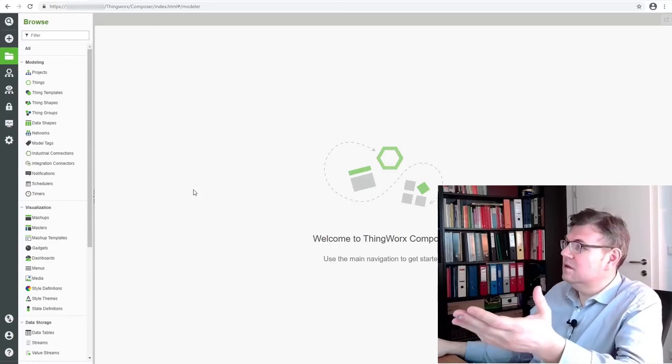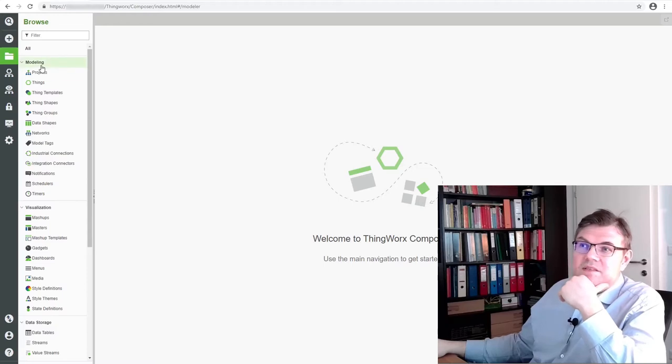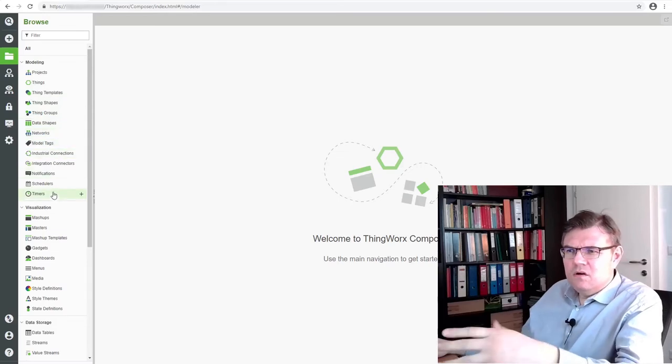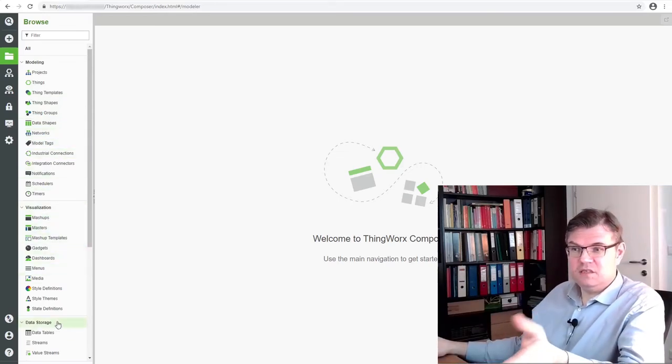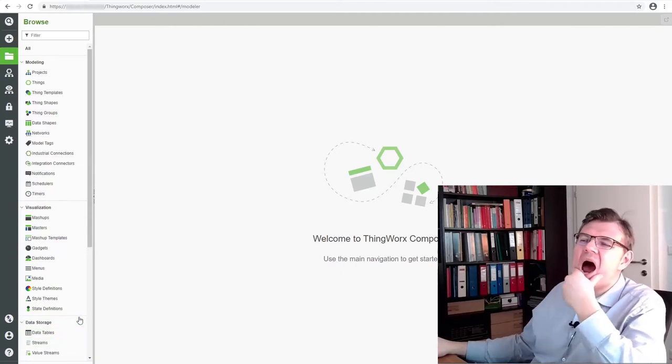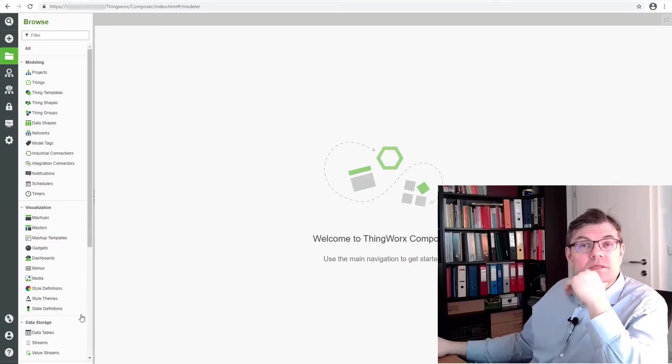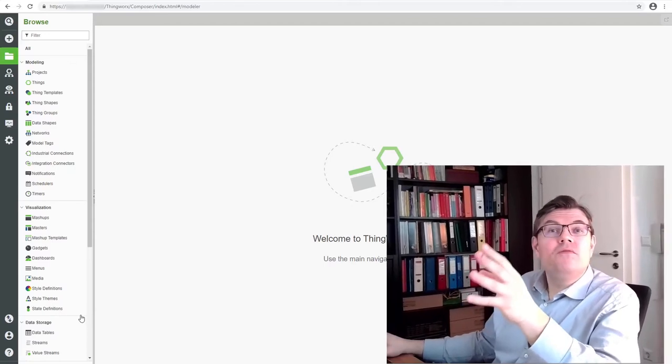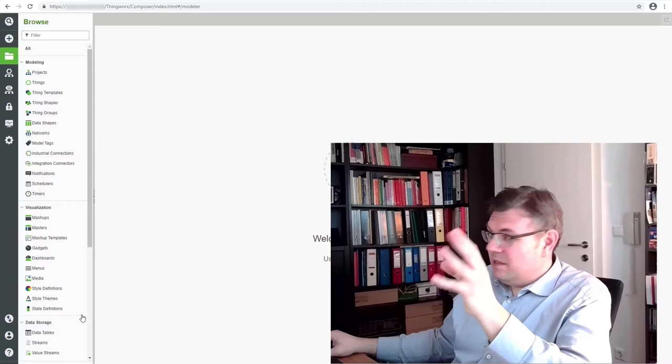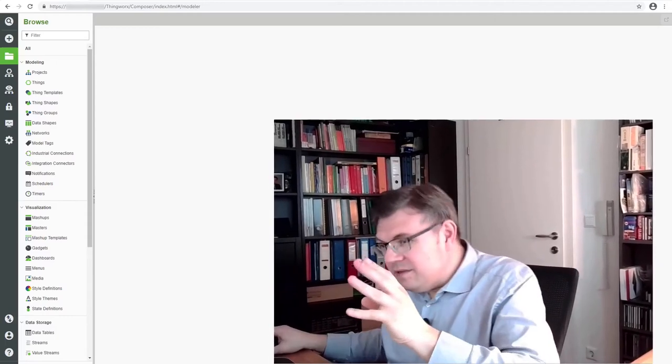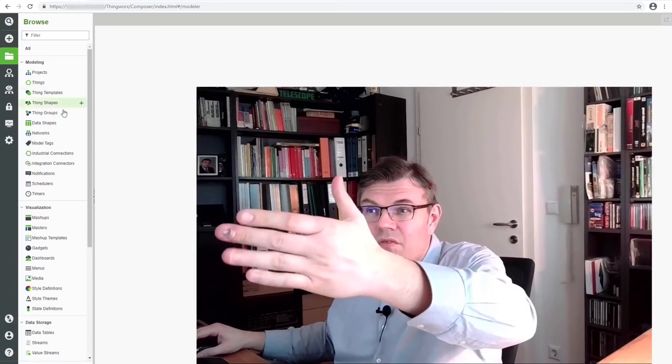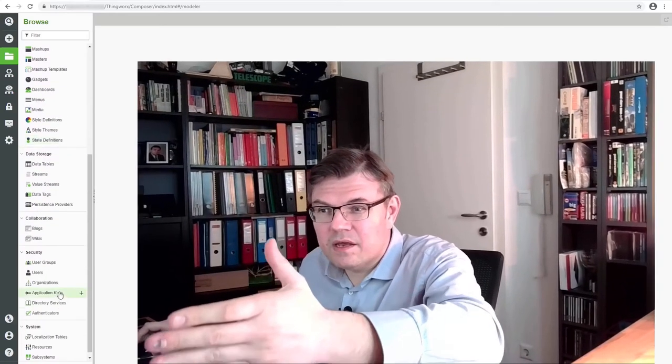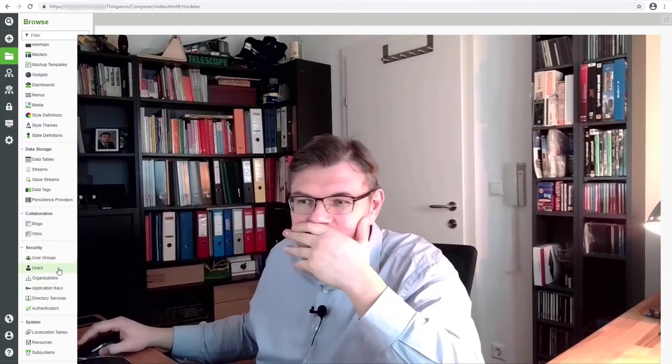That's the user interface of ThingWorx. You see on the left-hand side there are a lot of things: projects, things, thing templates, data shapes, network, mashups, masters, gadgets, data tables. It's pretty complex. Let's have a short view on how ThingWorx is organized and how those things are bound together.